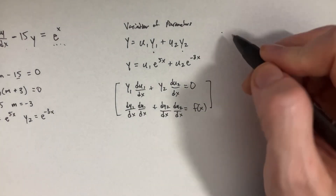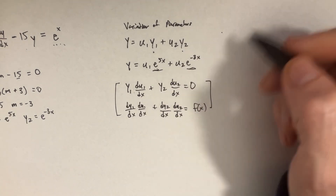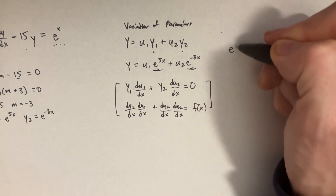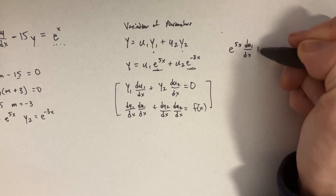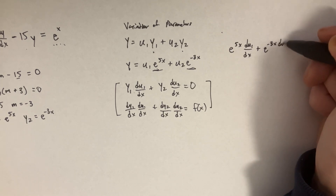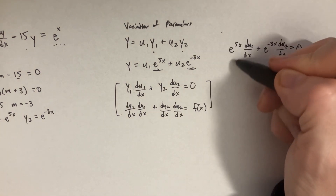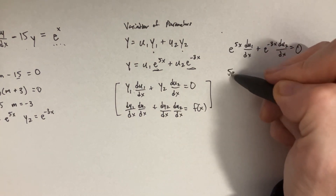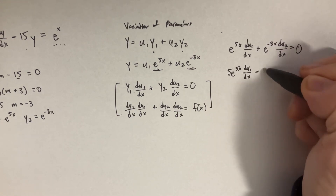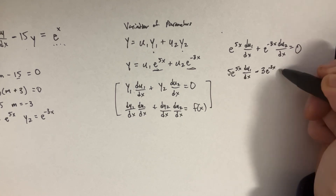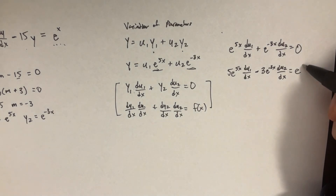Let's create our system of equations. Since y1 = e^(5x) and y2 = e^(-3x), we have: e^(5x)*(du1/dx) + e^(-3x)*(du2/dx) = 0. Then taking the derivatives: 5e^(5x)*(du1/dx) - 3e^(-3x)*(du2/dx) = e^x.